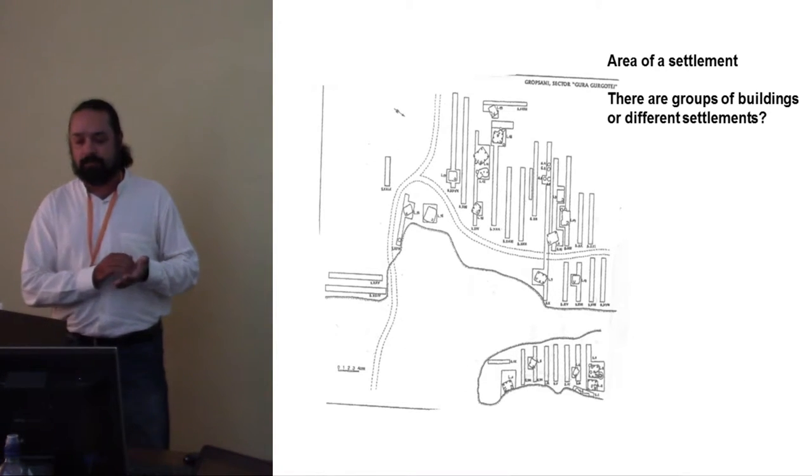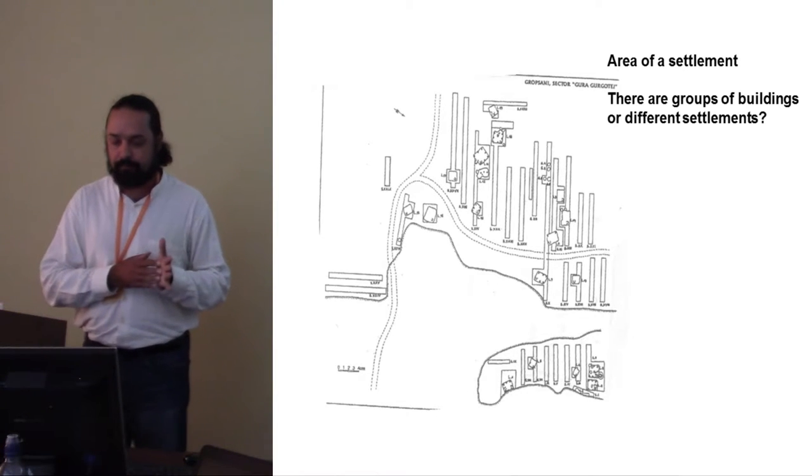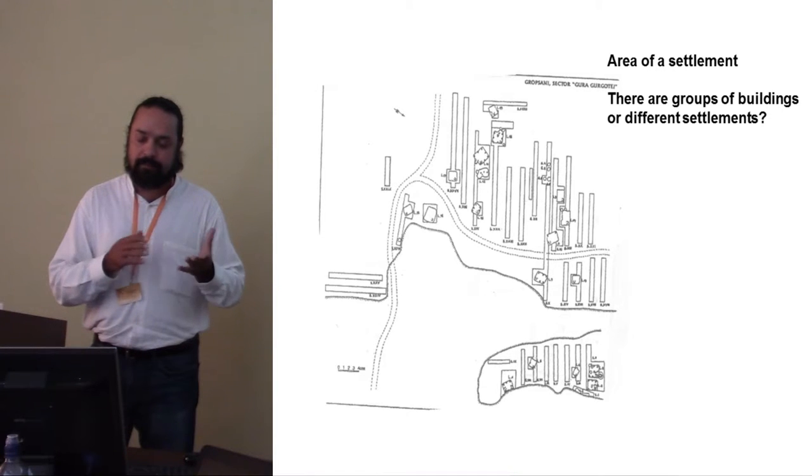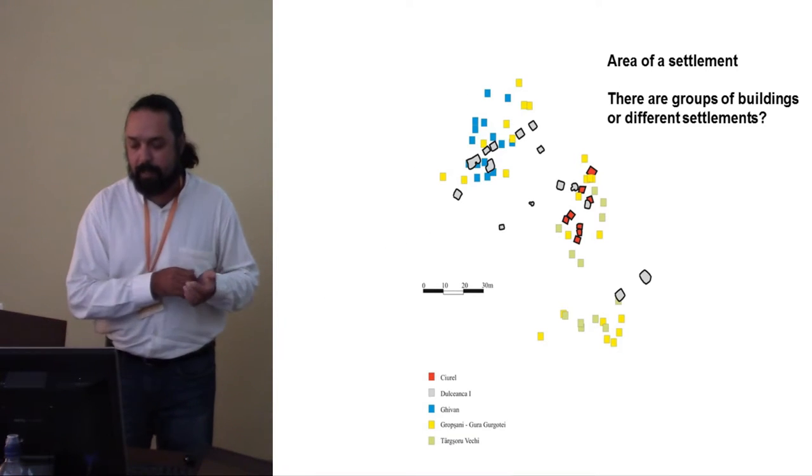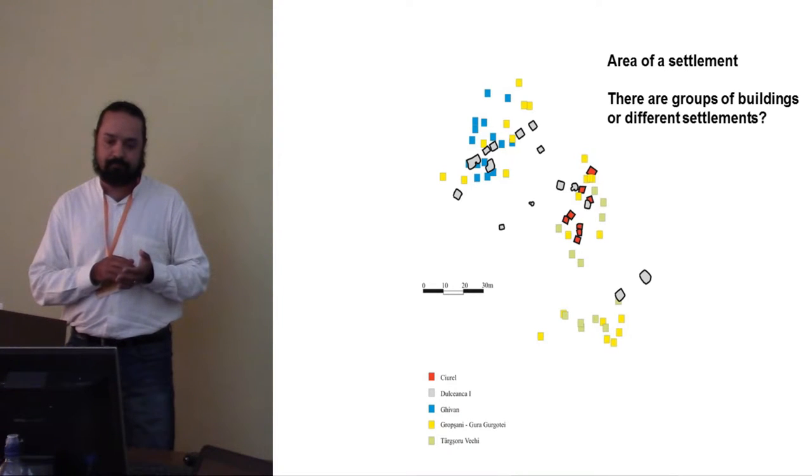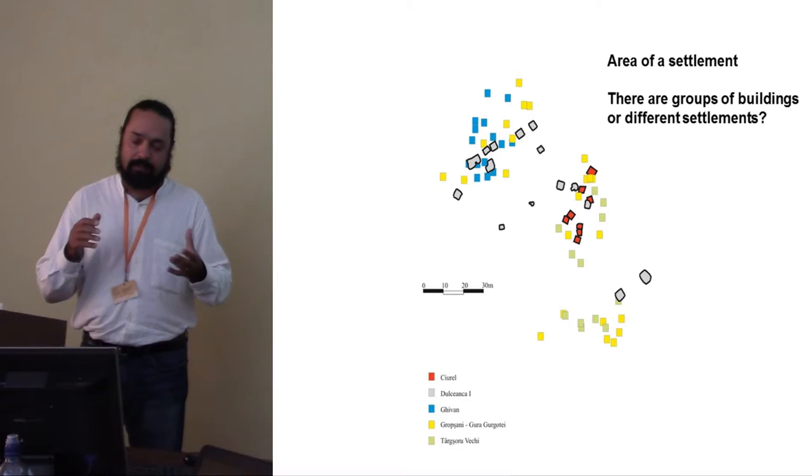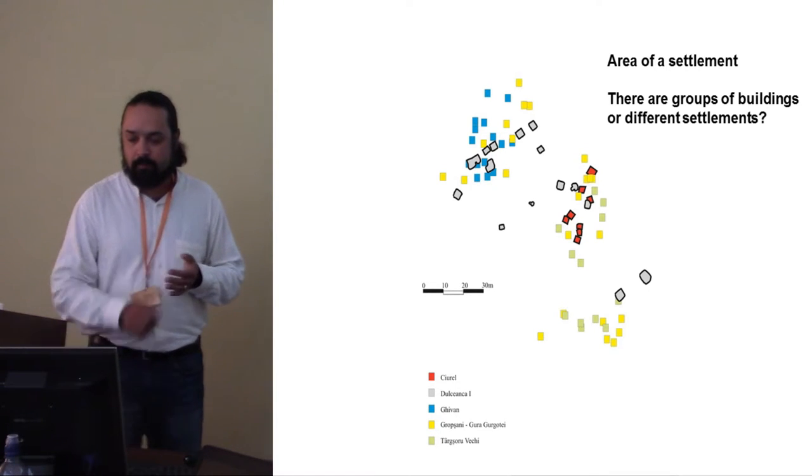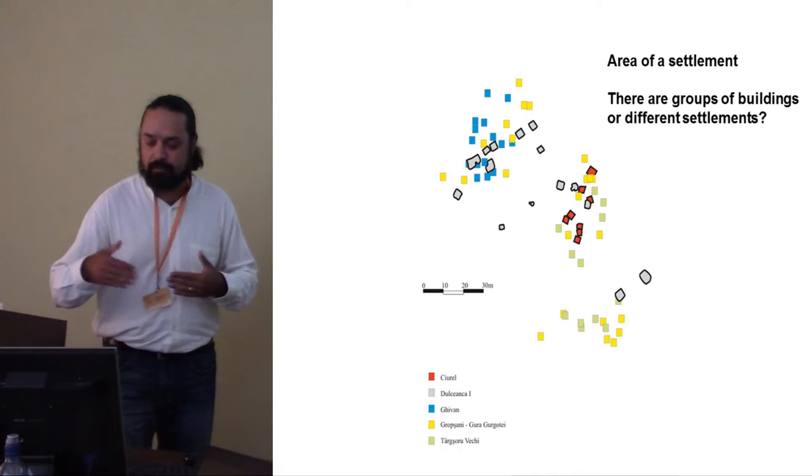Another problem is what is a settlement, how can we see it. And here is an example of a settlement from the studied area, from Grupsean, and it was published like one large big scene. But we made some overlapping of different kinds of settlements from different points from the map. I chose the largest excavated settlement. We can see that in fact it could be three groups of different settlements probably moving from one spot to another.